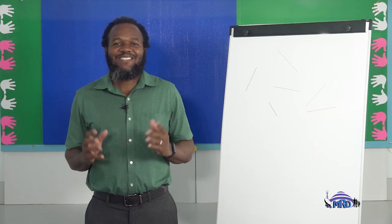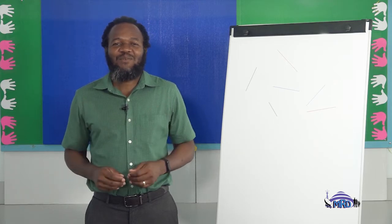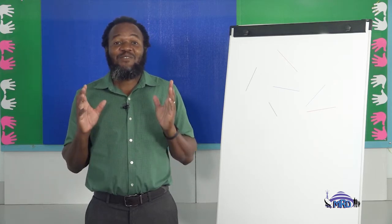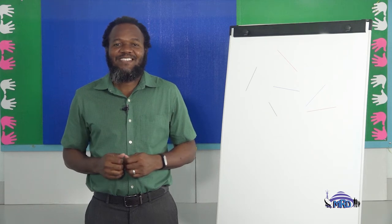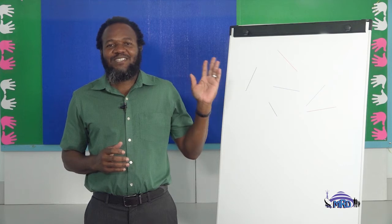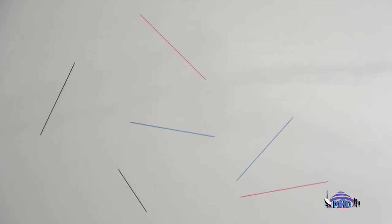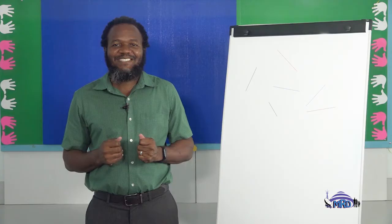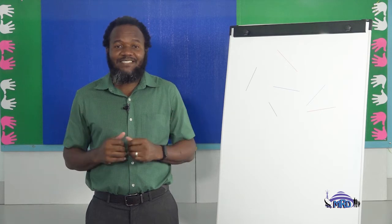Hi, everyone. This is Uncle Terry, and I'm so excited to be with you again today. Are you ready to have some fun as we learn? Let's go. I have drawn various types of lines on the whiteboard. See if you can tell me what our lesson will be about today. If you say that it's about slanted lines, then you are absolutely correct — slanted or oblique lines.